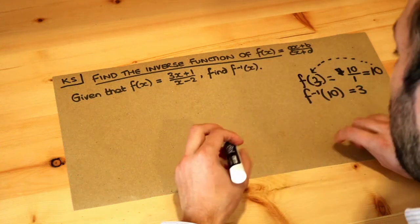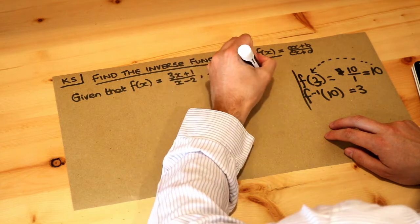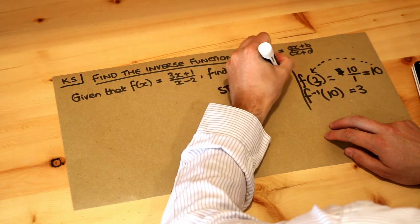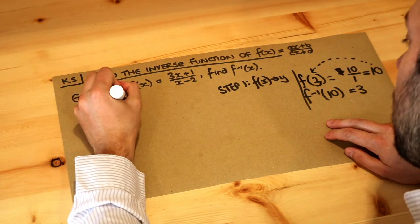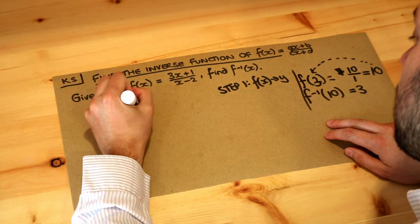And remember what the method was. Step 1 was to just replace f of x with y just for convenience. So we're going to write y equals 3x plus 1 over x minus 2.